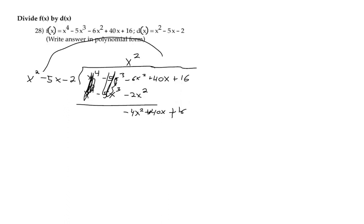Something to multiply to x squared to make it negative 4x squared. That's a minus 4. Negative 4 times x squared makes negative 4x squared, but we'll carry through and do that to everything else. Negative 4 times negative 5x makes positive 20x, and then negative 4 times negative 2 makes 8.